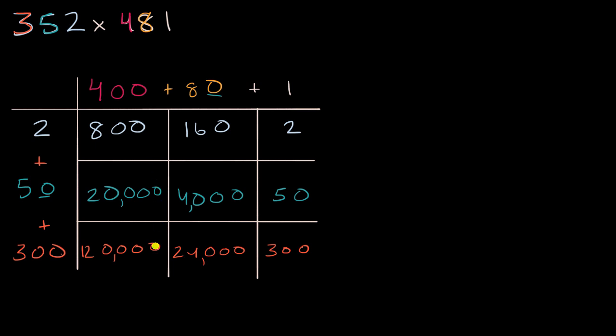And then what we want to do is add up all of these numbers. So let's actually add up the rows first. So if we sum this up, this is going to be 962. 800 plus 160 is 960 plus 2. This right over here is 24,050. And then this right over here is 144,300. 120,000 plus 24,000 is 144,000 plus 300. There you have it. And then you would add up these numbers to get your final answer.